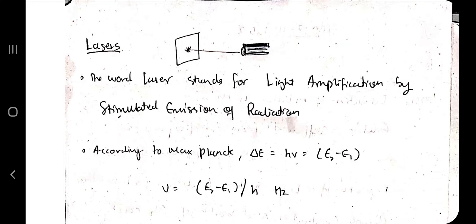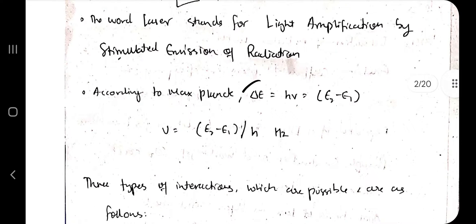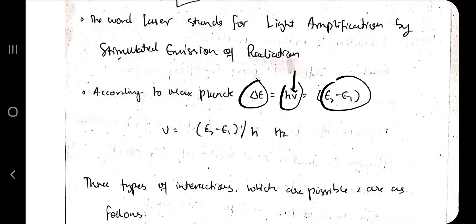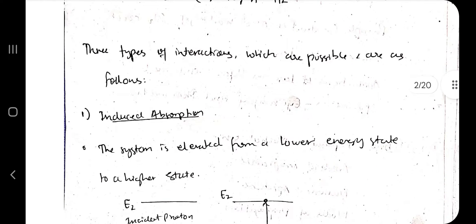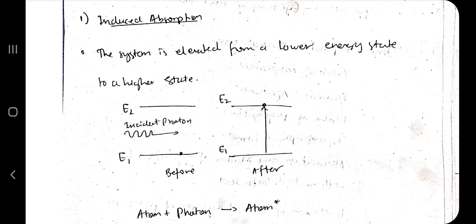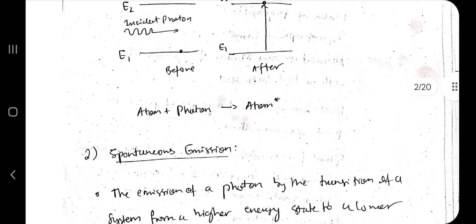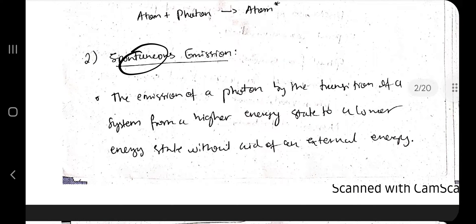Laser stands for Light Amplification by Stimulated Emission of Radiation. According to Planck's law, the important formula is delta E, the change in energy, equal to h times nu (frequency), which equals E2 minus E1. So nu equals (E2 minus E1) divided by h. There are three types of interactions possible, which are important for the Einstein coefficient derivations: induced absorption, spontaneous emission, and stimulated emission.